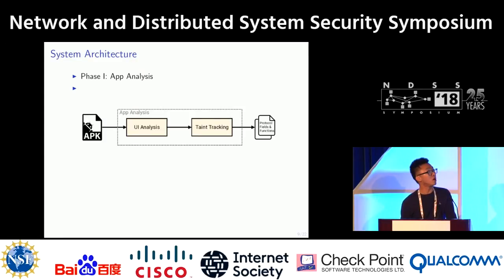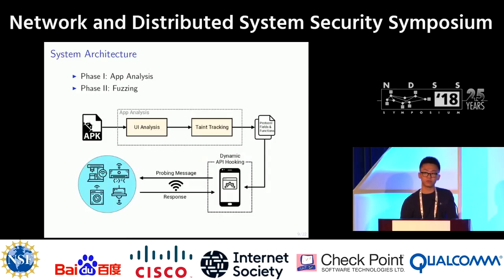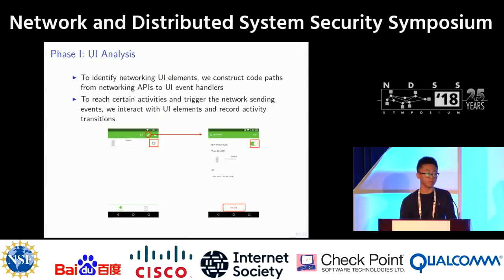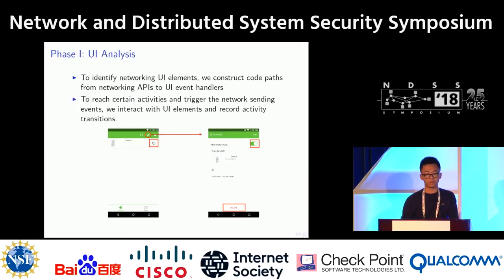Here is the system architecture. At a high level, there are two phases. Phase one is app analysis: we perform UI analysis to obtain the networking UI elements, and then we perform taint tracking to identify the protocol fields to mutate. Phase two is fuzzing: we use dynamic API hooking to mutate protocol fields and monitor responses. For UI analysis, we construct code paths from networking APIs to UI event handlers, interact with UI elements, and record activity transitions to trigger events for taint tracking and fuzzing.